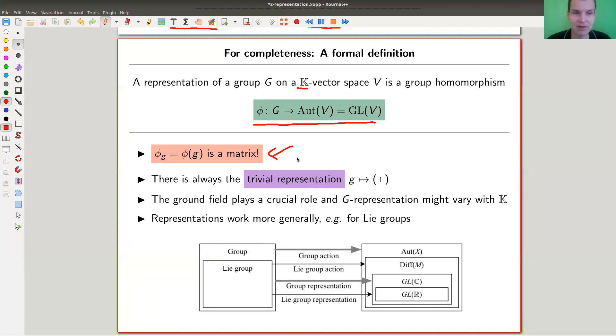A priori, it's not quite clear why those things should exist, but there's always a trivial representation. It's trivial. It's dimension, just the vector space you choose here is just one dimensional. So it's just the ground field itself, and everything just acts by the identity matrix. That's not very exciting. That's why it's called the trivial representation. So everything acts by one.